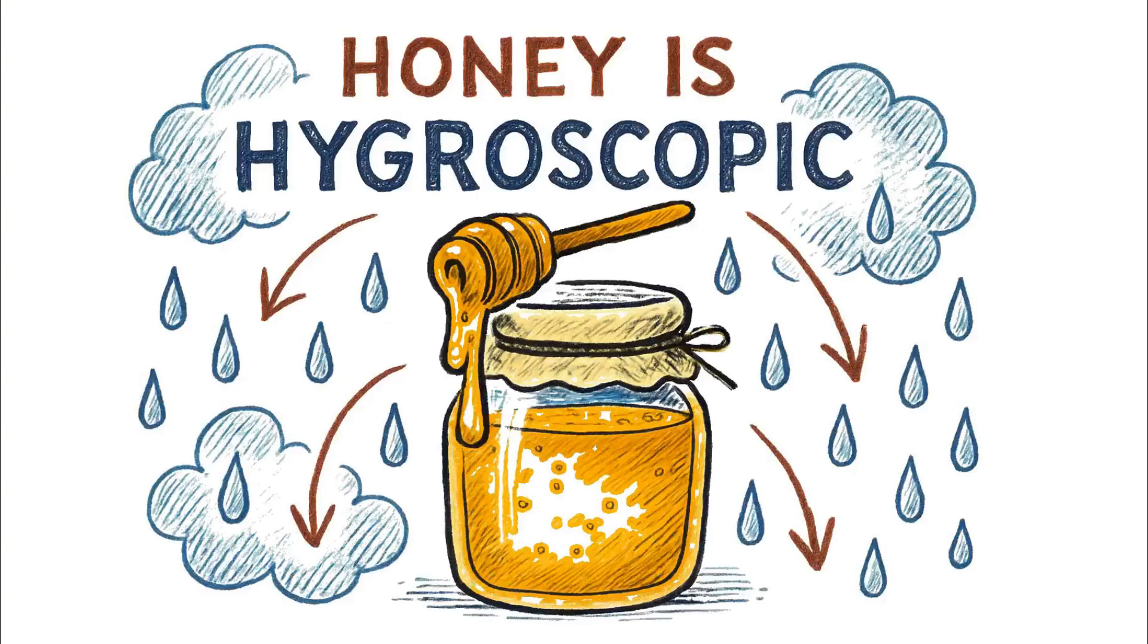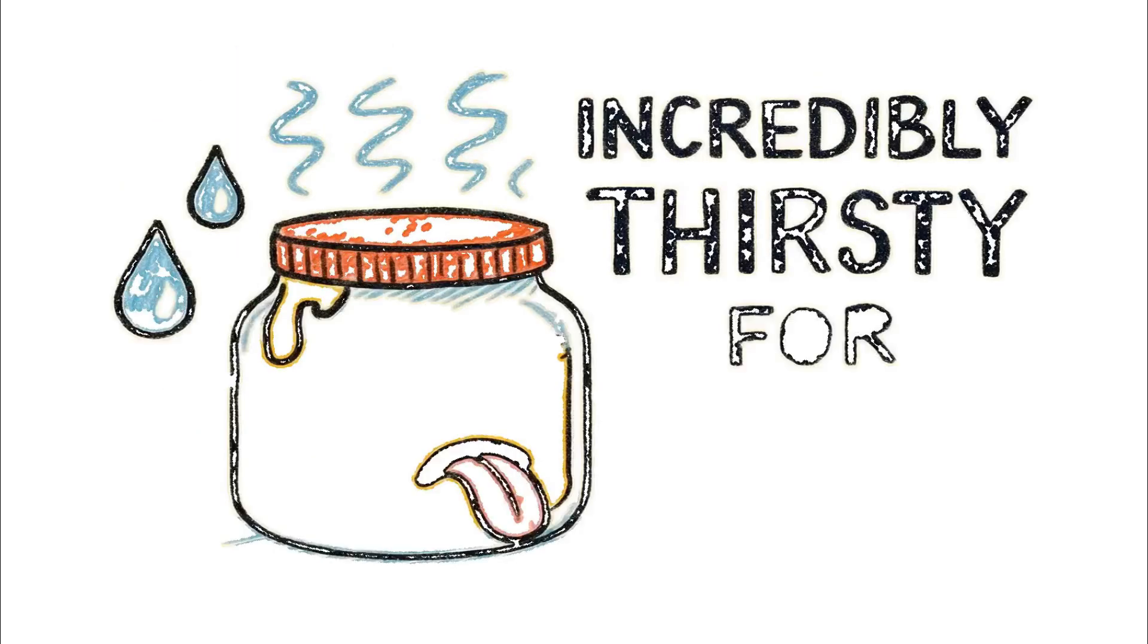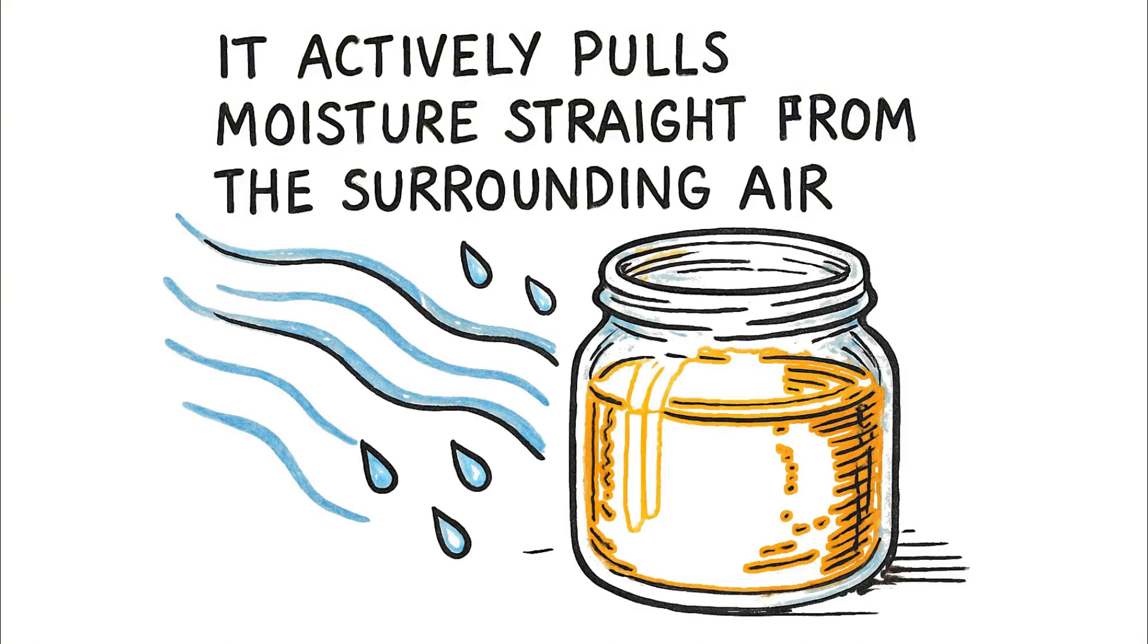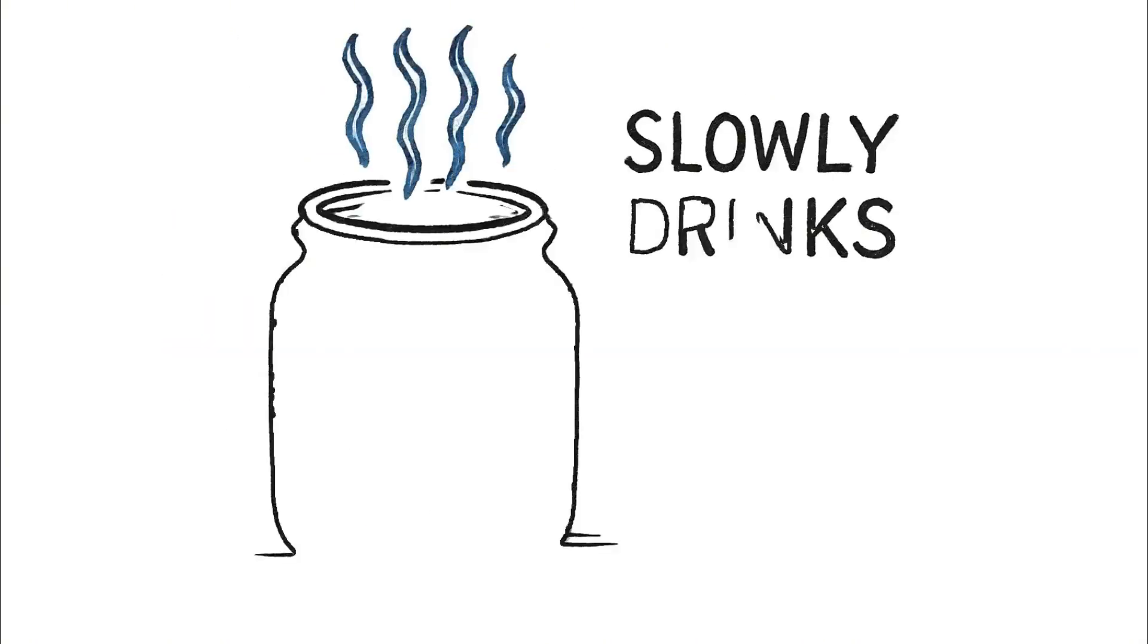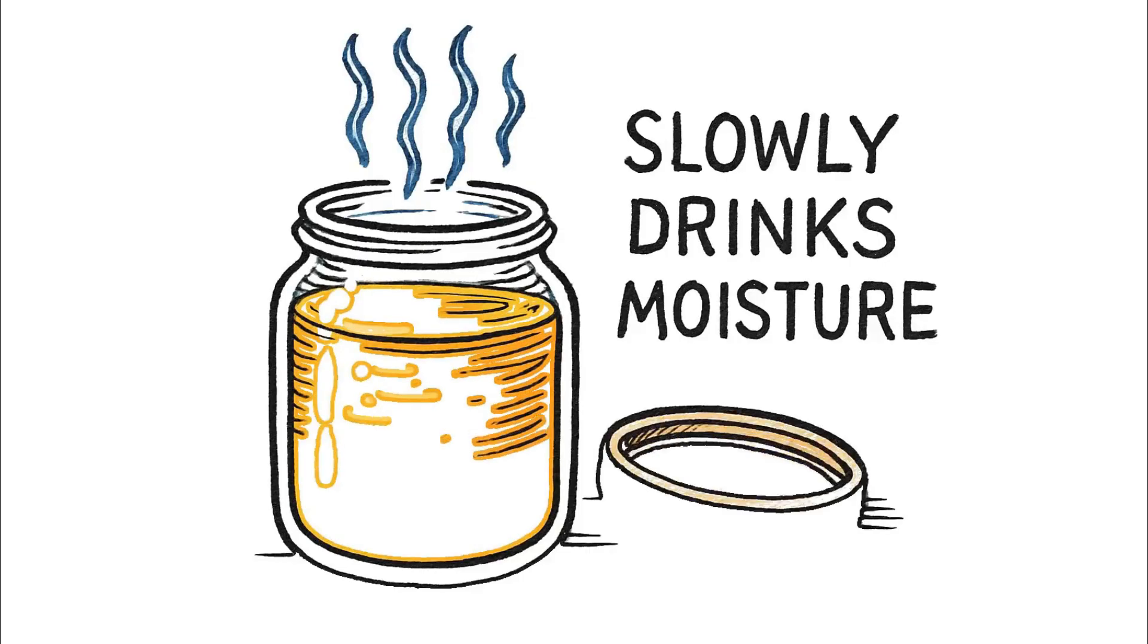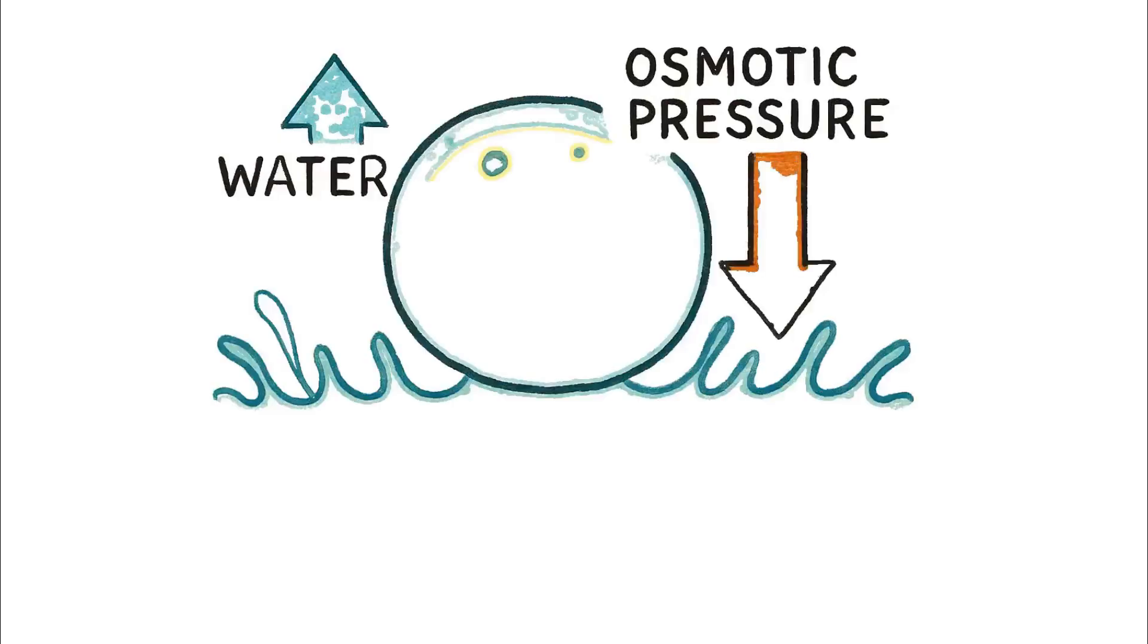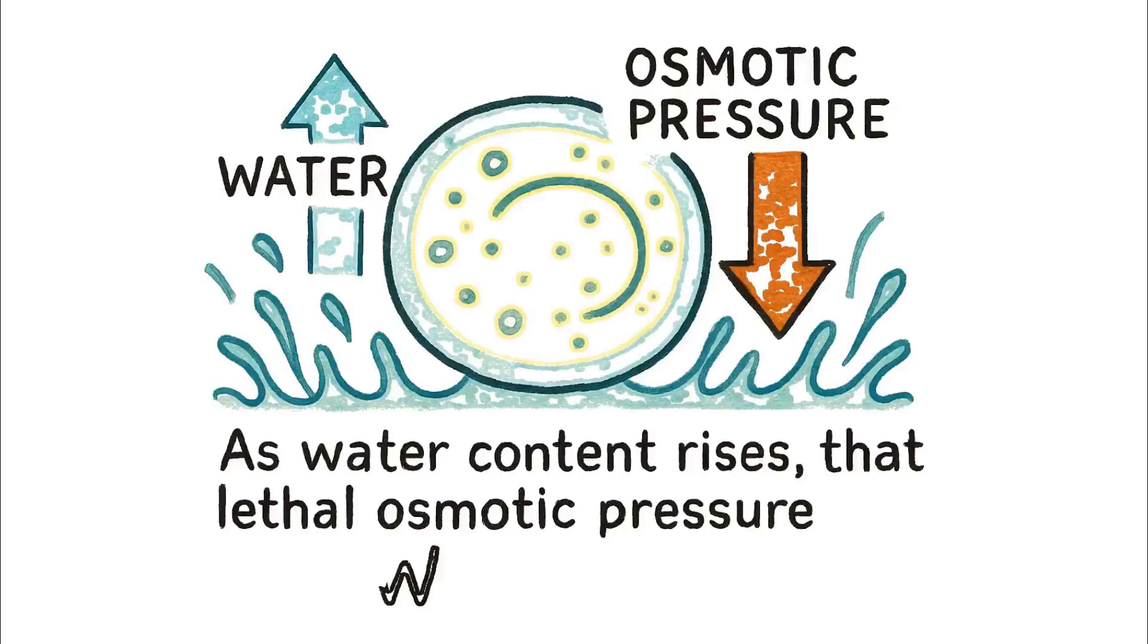But this incredible natural defense has one critical weakness. Honey is hygroscopic. That's a scientific term meaning it is incredibly thirsty for water. It actively pulls moisture straight from the surrounding air. If you leave a jar of honey open in a humid room, it will slowly drink that moisture, diluting its own sugar concentration. As the water content rises, that lethal osmotic pressure weakens.